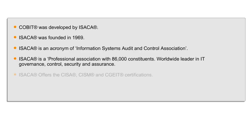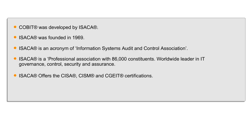ISACA spreads the knowledge of IT governance, control, security, and assurance. ISACA is responsible for developing COBIT 5 and assisting enterprise leaders and boards of directors in their IT governance responsibilities by providing original research and case studies. ISACA also administers globally known certifications like CISA, CISM, and CGEIT — Certified in Governance of Enterprise IT.